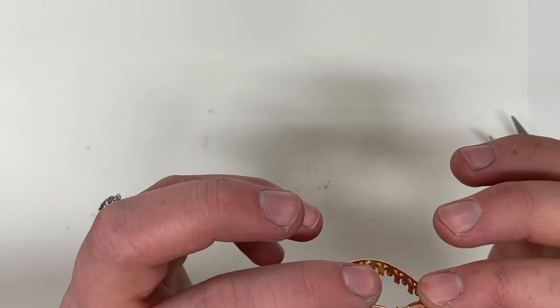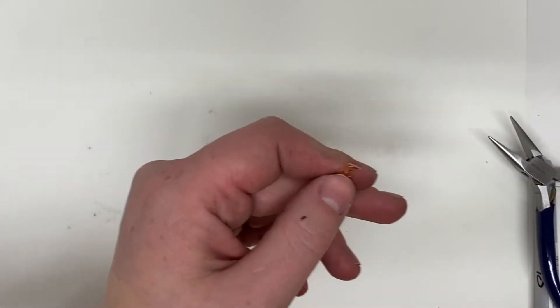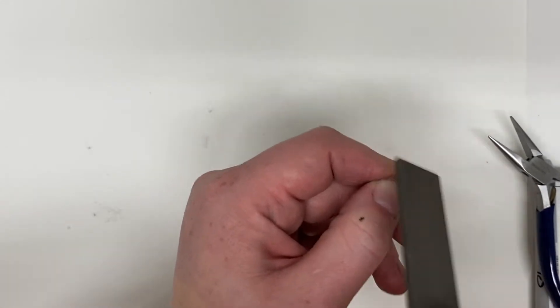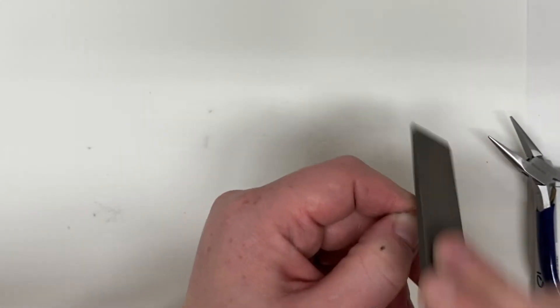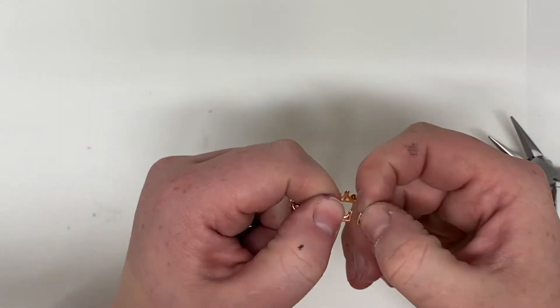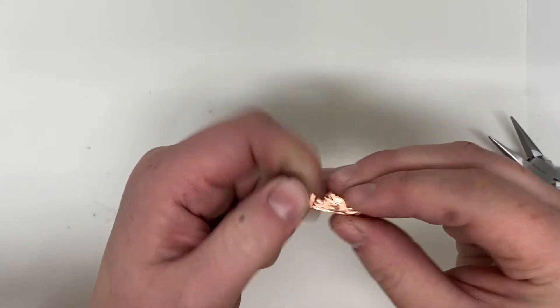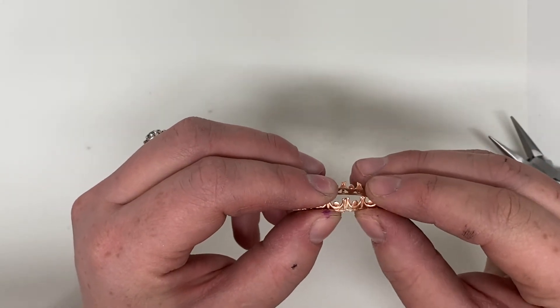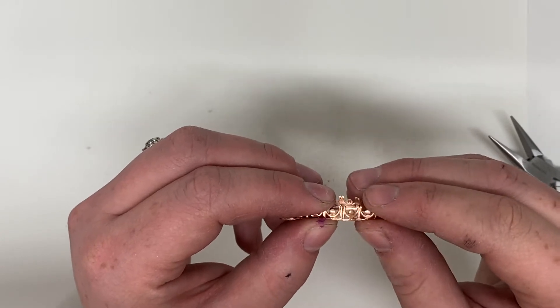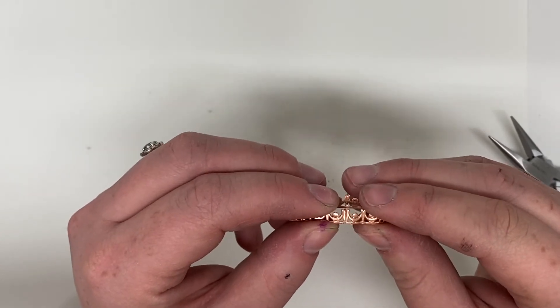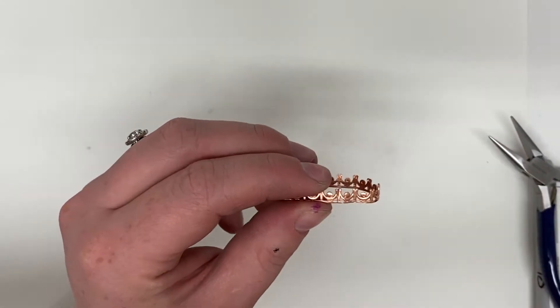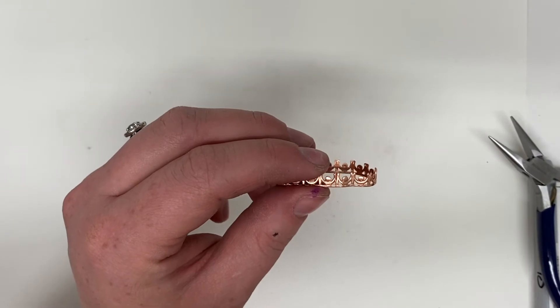I actually think I have to file this side one more time, so I'm going to hit that with the file again. The better your seam is now, the easier time you're going to have to solder it. So that looks pretty good. Once your seam is where you want it to be, you can then take it over to the soldering station. We're going to go solder it now.